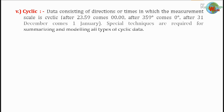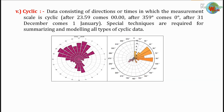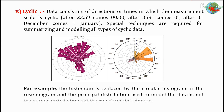Cyclic data consists of directions or times in which the measurement scale is cyclic. After 23:59 comes 00:00, after 359 degrees comes 0 degrees, after December 31 comes January 1. Special techniques are required for summarizing and modeling all types of cyclic data. For example, the histogram is replaced by the circular histogram or the rose diagram, and the principal distribution used to model the data is not the normal distribution but the Von Mises distribution.